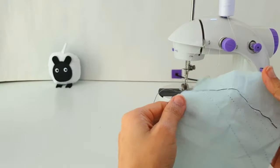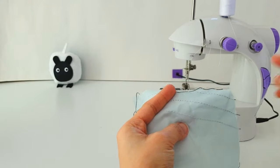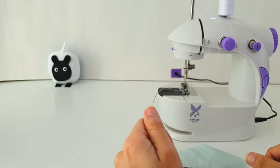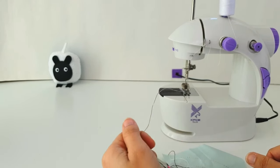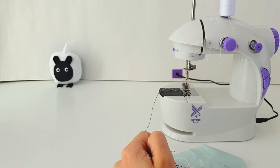So there you have it, a very simple two-step method to adjust the thread tension on your mini sewing machine. I hope this was helpful. If it was, give it a thumbs up and subscribe to my channel, and I'll see you next time. Bye!